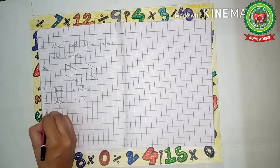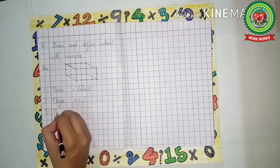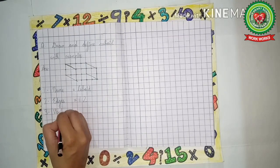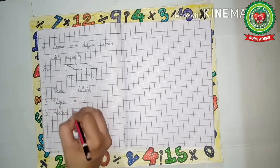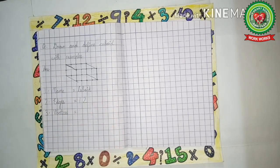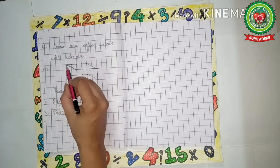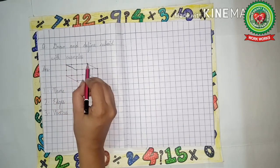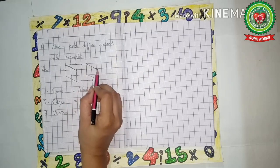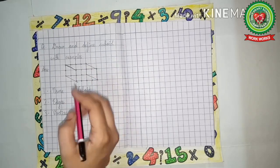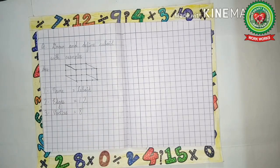Now leave one line. Three dot: Vertices—V-E-R-T-I-C-E-S. Now let's count the vertices. Vertices are the corners—one, two, three, four, five, six, seven, eight. Eight vertices are there.